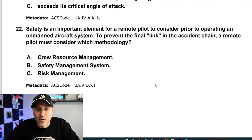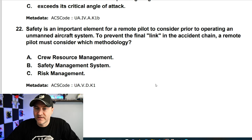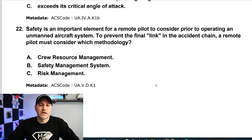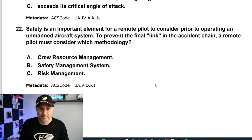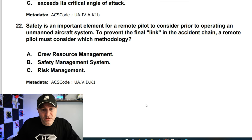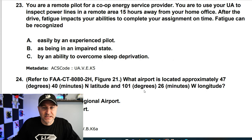Safety is an important element for a remote pilot to consider prior to operating an unmanned aircraft system. To prevent the final link in the accident chain, a remote pilot must consider which methodology? The answer is C — risk management methodology. Resource management would probably also help here, but risk management is the answer the FAA is looking for.